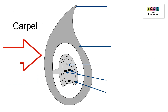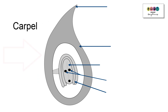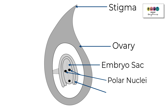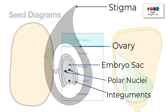Now let's look at the carpel in more detail. Starting from the top, this is the stigma, then we have the ovary. The next label is the embryo sac, then we have the two polar nuclei, and then we have the integuments, which are the walls of the ovule.